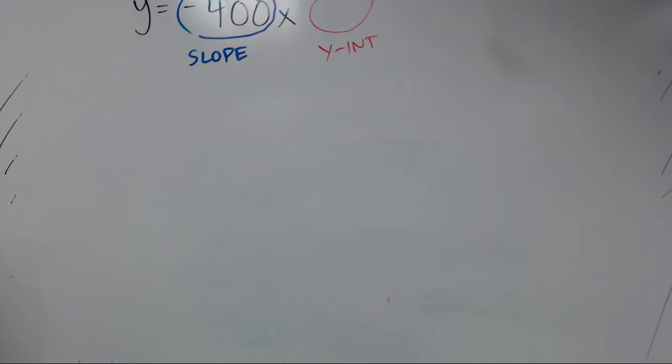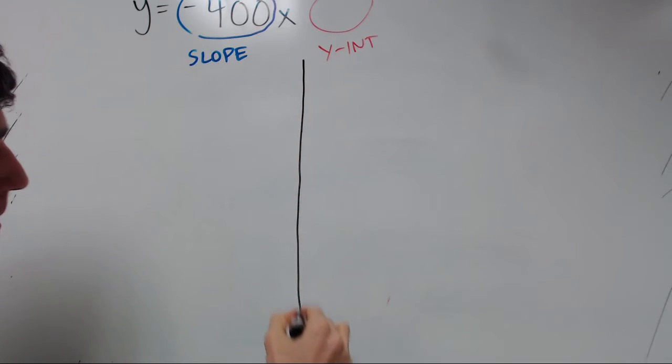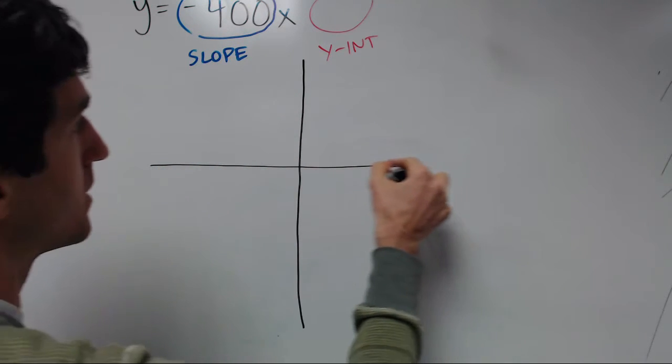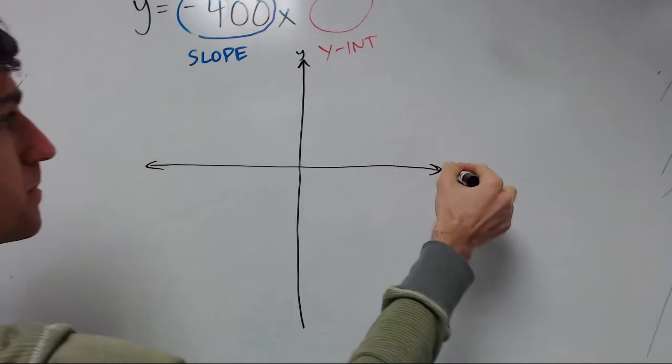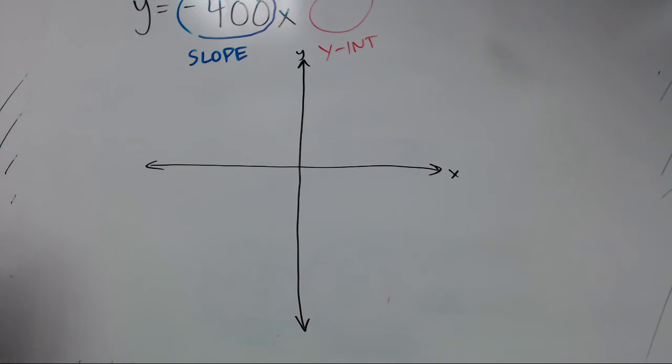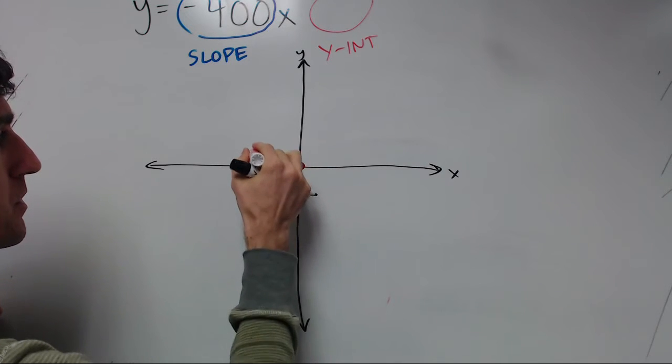So for the y-intercept of being a 0, that means that's going to be a point at the origin. And so that's an x-intercept and a y-intercept. So we can go ahead and put that dot in the middle for that y-intercept. 0, 0.